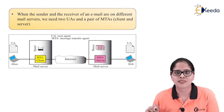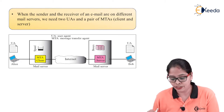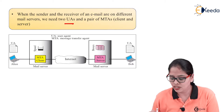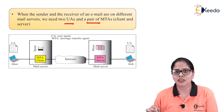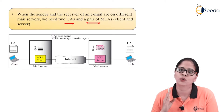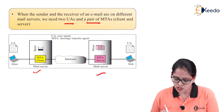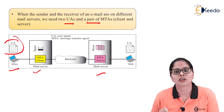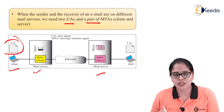Now the second scenario: when the sender and receiver of an email are at different mail servers, we need two user agents and a pair of MTA client and server. In the last scenario, both sender and receiver were connected to the same mail server. Now here we have two different mail servers. Alice, to create the mail, opens his mailbox with the help of the user agent. Once the mail is created, it is forwarded to the mail server.